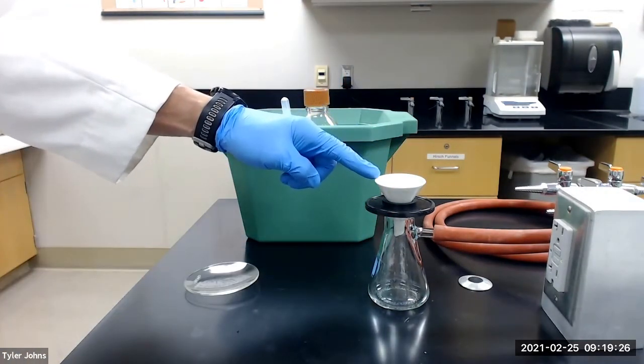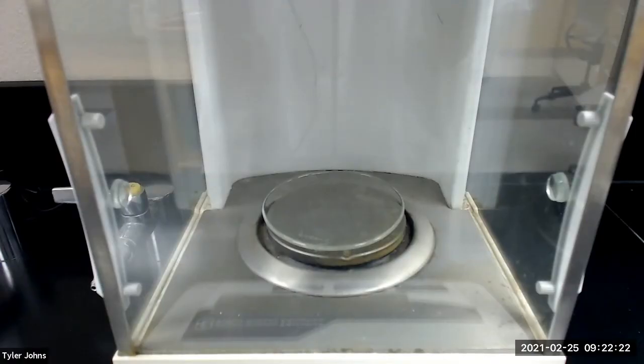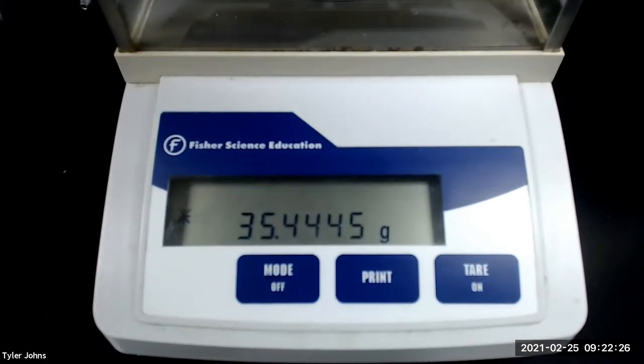As our crystals continue to dry, we will pre-weigh a watch glass. The mass of the pre-weighed watch glass is 35.4445 grams.